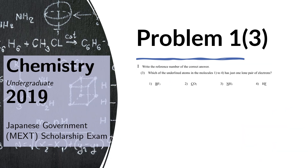Problem 1.3: In which of the following underlined atoms in the molecules 1 to 4 has just one lone pair of electrons? Lone pairs of electrons are a pair of electrons that do not participate in bonding — a pair of valence electrons that does not participate in bonding. For example, in this case, let's look at boron.